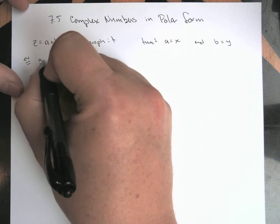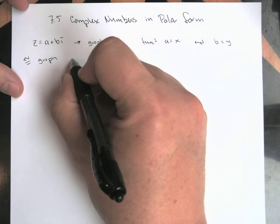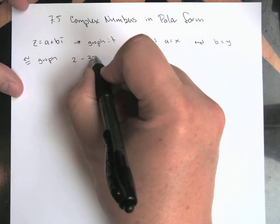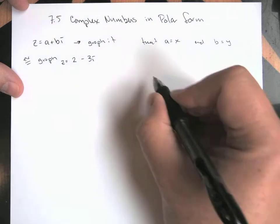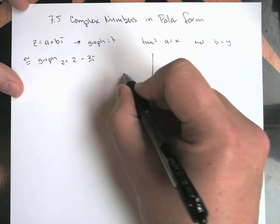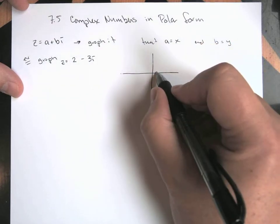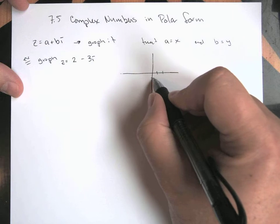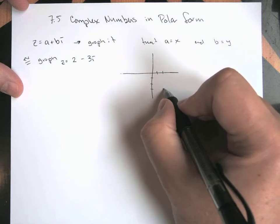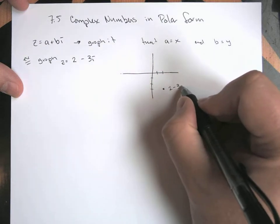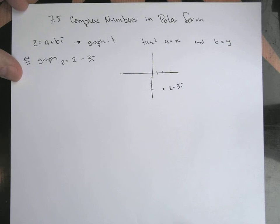So if, for example, I was going to graph a point like 2 minus 3i, what that's going to look like is, right, so positive 2 and then down 1, 2, 3. So to kind of visually represent this, we need to do something like this.